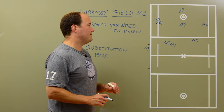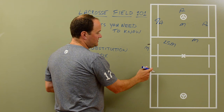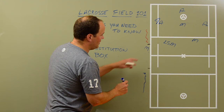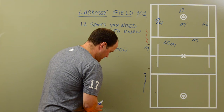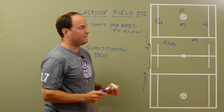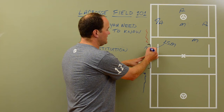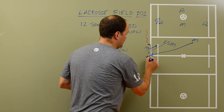Let's say the long stick midi needs to get out and we need our best dodging midi in the game. The long stick midi can exit the field anywhere between the two hashes in the substitution box, which is only on one side. You can go on either half of the field while substituting, but you cannot enter the field on the other side of the hash mark — it has to be through the substitution box. Once the long stick midi steps over the sideline in the substitution box, that frees up the offensive player to come on in his place. It's a one-for-one trade.